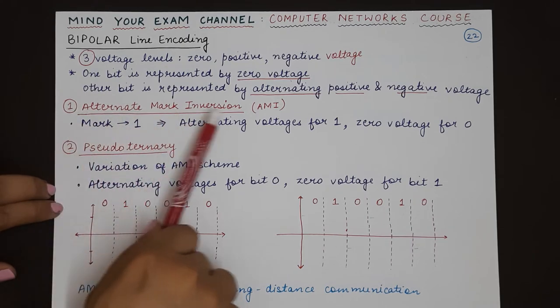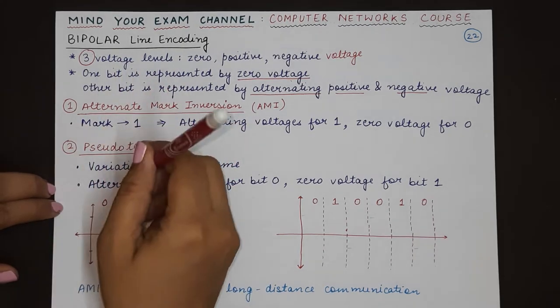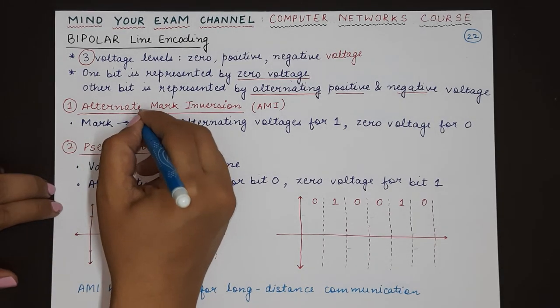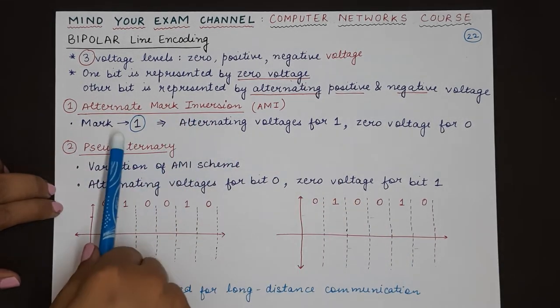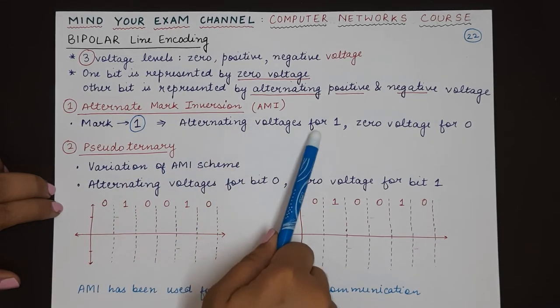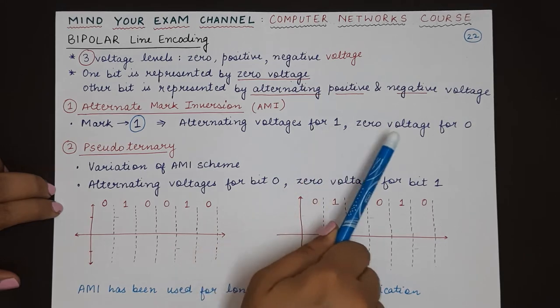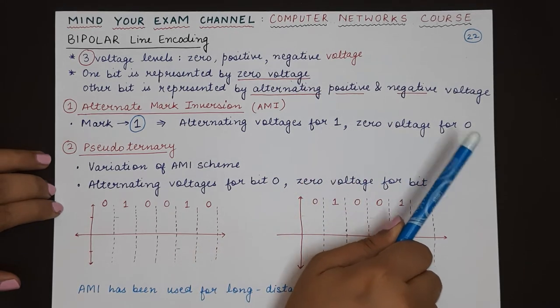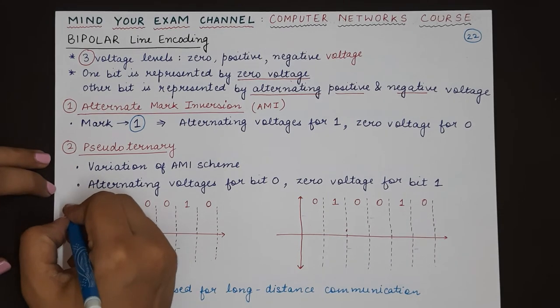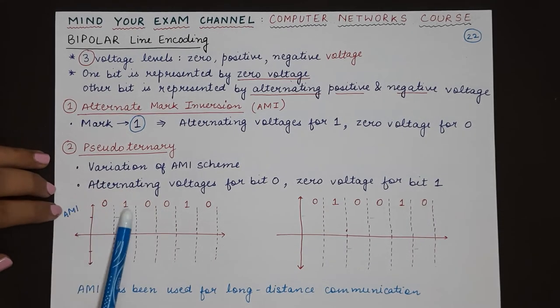Alternate Mark Inversion: mark means one. So alternate one means you use alternate voltages for bit one. Therefore, alternate voltages will be used for bit value one, and zero voltage will be used for bit value zero. Let's see how we code this data: 0, 1,